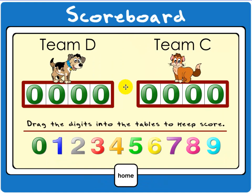If they got that correct, they can change their score for the team simply by dragging the number digits into the correct location. In this case, we're going to add 100 to team D and then I'm going to go back home.